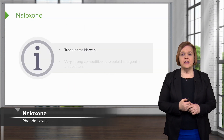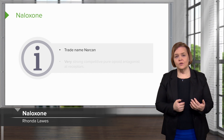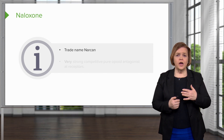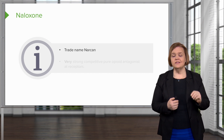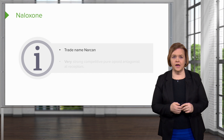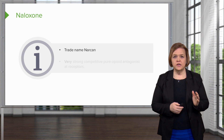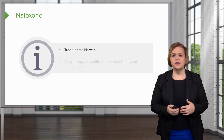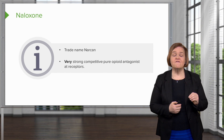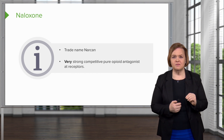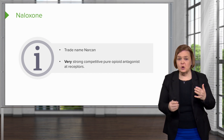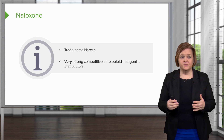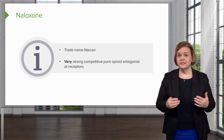The trade name for naloxone is Narcan. I wanted to include that because it's the name you see in the news a lot. Naloxone is the generic name; Narcan is one of the trade names. It is a very strong, competitive, pure opioid antagonist at the receptors — I said that slowly because I wanted it to sink in.